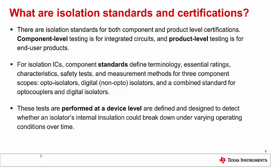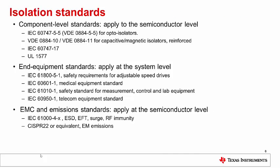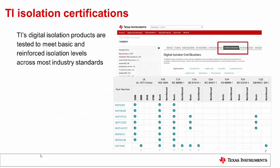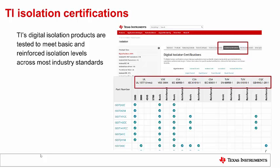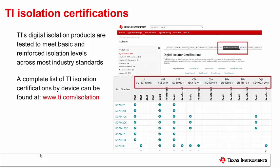These tests are performed at a device level, and are defined and designed to detect whether an isolator's internal insulation could break down under varying operating conditions over time. Isolation standards for component level apply to the semiconductor level, and equipment standards apply at the system level. EMC and emission standards apply at the semiconductor level. TI's digital isolation products are tested to meet basic and reinforced isolation levels across most industry standards. You can find a complete list of TI isolation certifications by device at www.ti.com/isolation, and click on the isolated certifications tab to view the complete list.